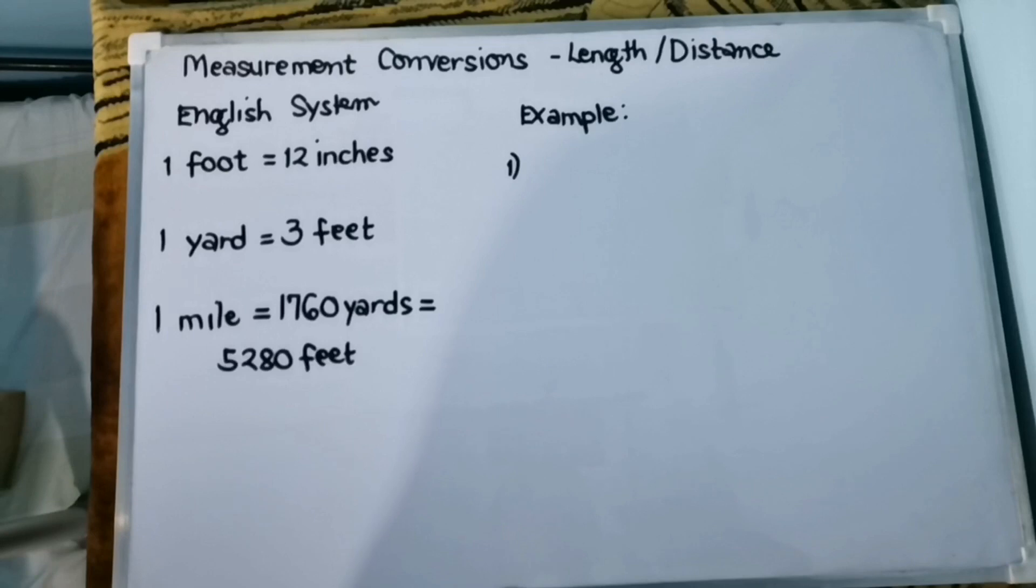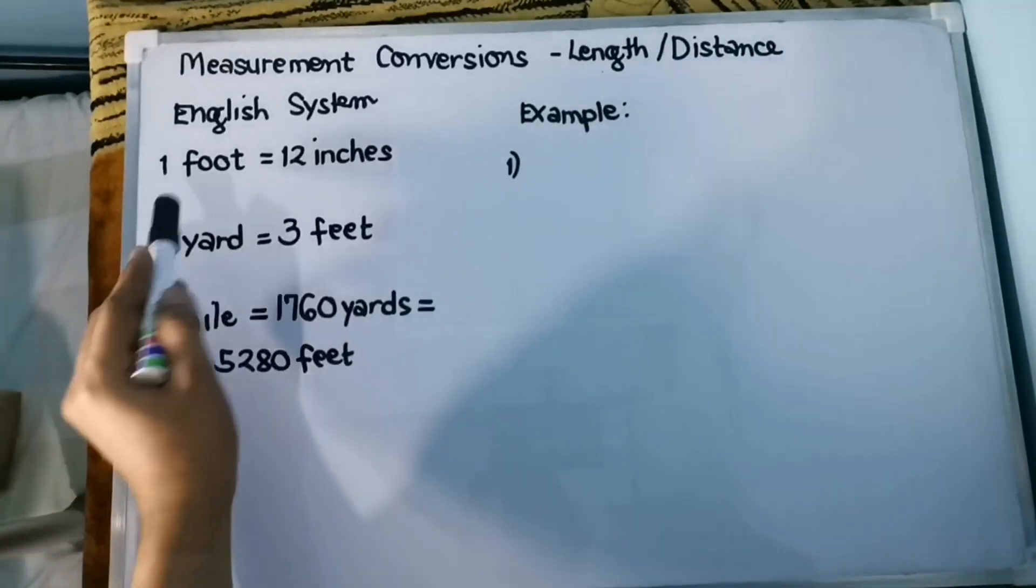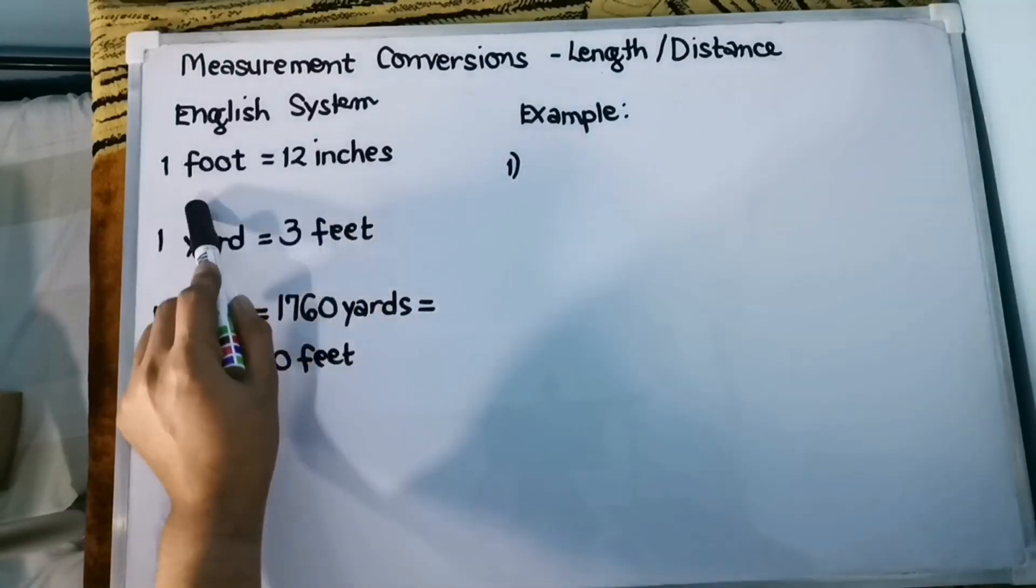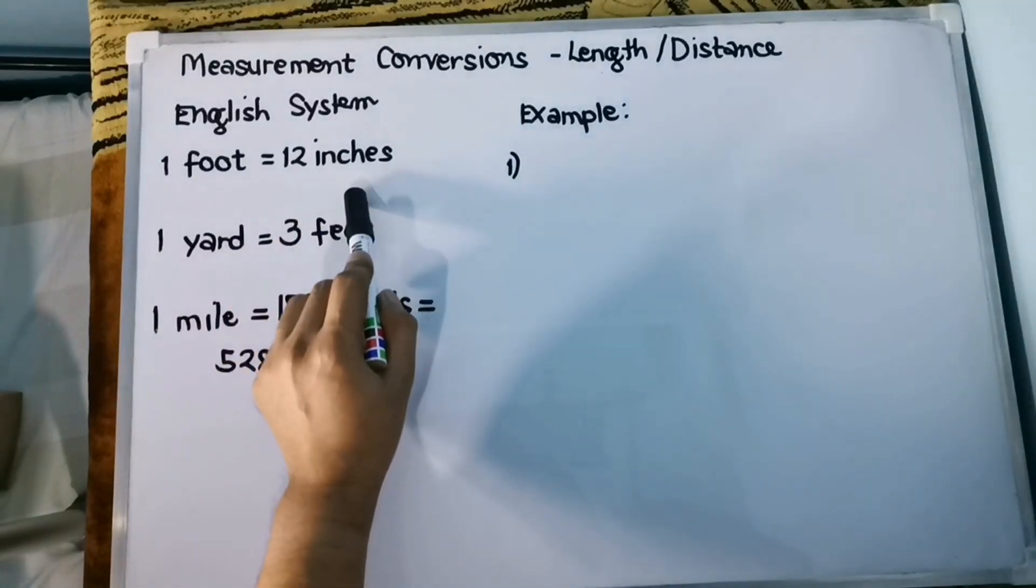So let's start with length or distance. We will be using the English system wherein I have here three conversions that you need to remember. The first one is 1 foot is equivalent to 12 inches.